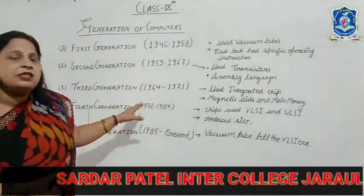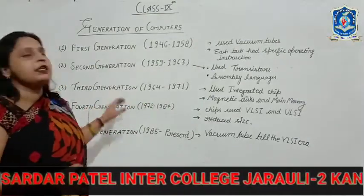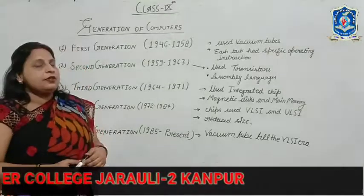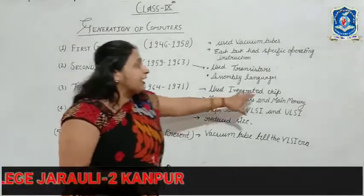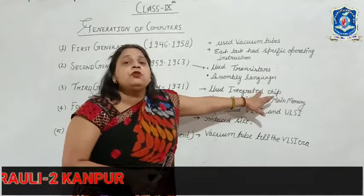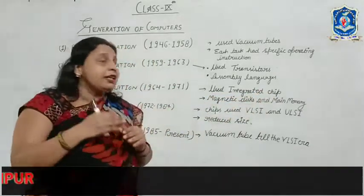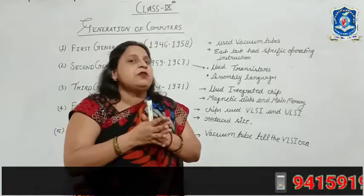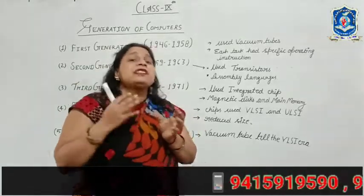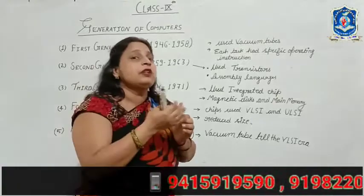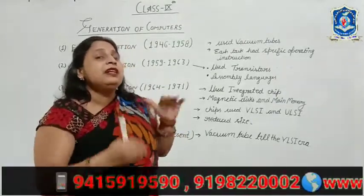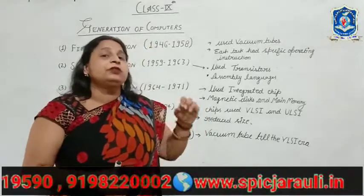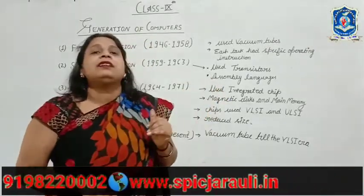Now the 3rd generation, which ran from 1964 to 1971. In this generation, integrated gate chips were used. Magnetic memory and many other types of memory were also used in this generation. Computers became smaller than in the 2nd generation, and the size was reduced compared to previous generations.